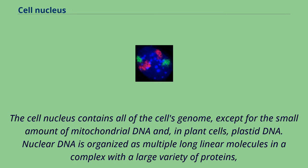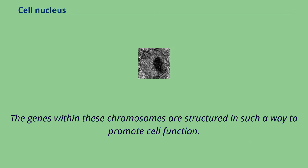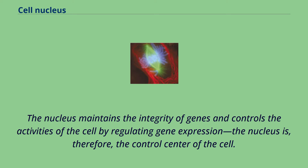The cell nucleus contains all of the cell's genome, except for the small amount of mitochondrial DNA and, in plant cells, plastid DNA. Nuclear DNA is organized as multiple long linear molecules in a complex with a large variety of proteins, such as histones, to form chromosomes. The genes within these chromosomes are structured in such a way to promote cell function. The nucleus maintains the integrity of genes and controls the activities of the cell by regulating gene expression — the nucleus is therefore the control center of the cell.